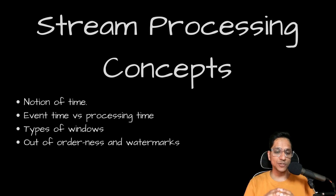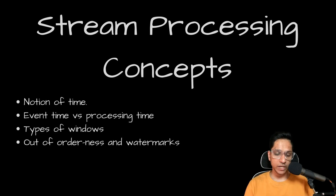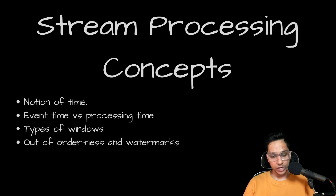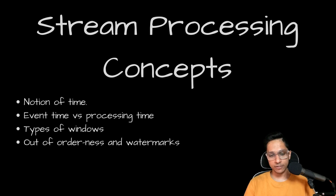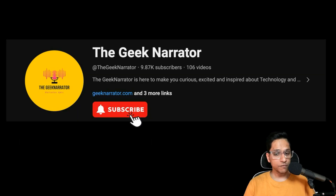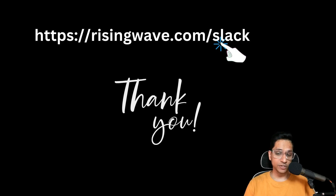With that, let's quickly recap what we discussed in this video. We started by understanding the notion of time and why it is important in stream processing, including the nuances of choosing event time versus processing time. We looked at why windows are important and the different types of windows. Then we looked at how out-of-orderness is handled using watermarks. I hope you found this video informative. Don't forget to subscribe to our YouTube channel, share this video with your network, and do check out RisingWave and join the Slack community. Thank you for watching and see you in the next video.